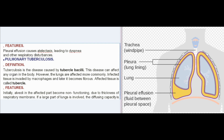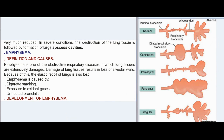Tuberculosis is the disease caused by tubercle bacilli and can affect any organ, but the lungs are affected most commonly. Infected tissue is invaded by macrophages and later becomes fibrous — the affected tissue is called a tubercle. Initially, alveoli in the affected part become non-functioning due to thickness of the respiratory membrane. If a large part of the lungs is involved, diffusing capacity is greatly reduced. In severe conditions, destruction of lung tissue is followed by formation of large abscess cavities.